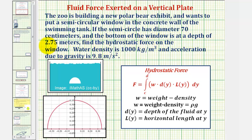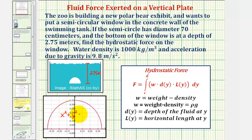The bottom of the window is at a depth of 2.75 meters, so this distance here is 2.75 meters. We need to be careful because the diameter is given in centimeters, so if we put this semicircle on the coordinate plane, the diameter would be 0.7 meters so we have common units. If the center is at the origin, on the right we'd have 0.35 meters and on the left negative 0.35 meters. We can write the equation of this semicircle as x² + y² = 0.35², as long as y is greater than or equal to zero.